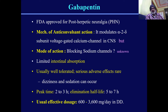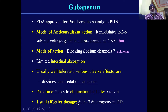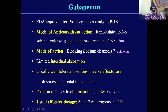Gabapentin is FDA-approved for post-herpetic neuralgia. Its mechanism involves modulating the alpha-2-delta subunit of voltage-gated calcium channels in the central nervous system, thereby providing pain relief. A problem with gabapentin is its limited absorption in the stomach and intestine, especially when taken with food. Doses range from 300 to 3600 mg, but effective absorption may only reach around 2000 to 2200 mg — approximately 60% is absorbed — so 40% is wasted when taken with food. The peak effect starts between two to three hours.